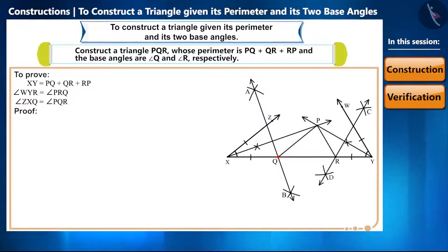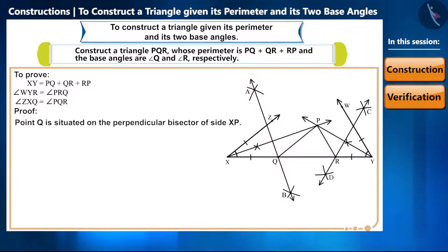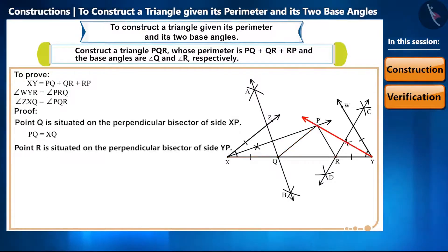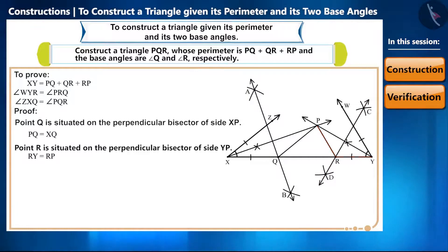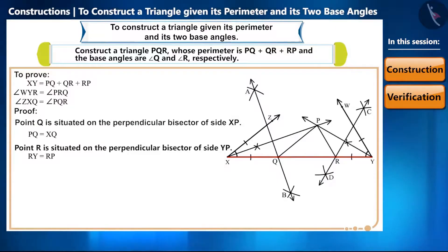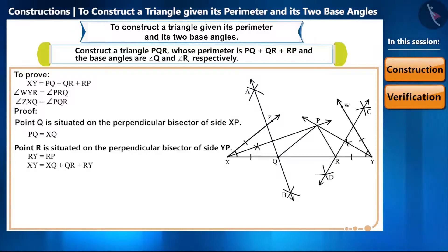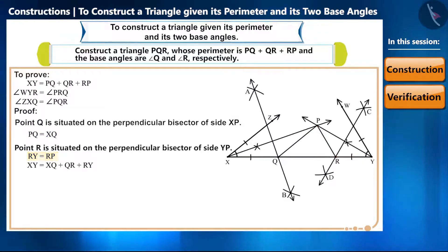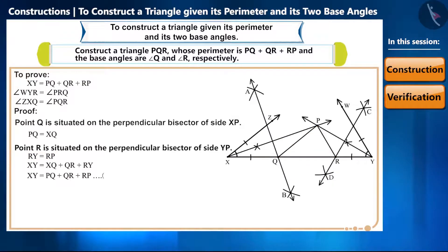From the construction, point Q is on the perpendicular bisector of XP, so PQ equals XQ. Similarly, point R is on the perpendicular bisector of YP, so RY equals RP. The line segment XY is formed by combining XQ, QR, and RY, giving XY equals XQ plus QR plus RY. Substituting PQ for XQ and RP for RY, we get XY equals PQ plus QR plus RP — equation 1, proving the first part.